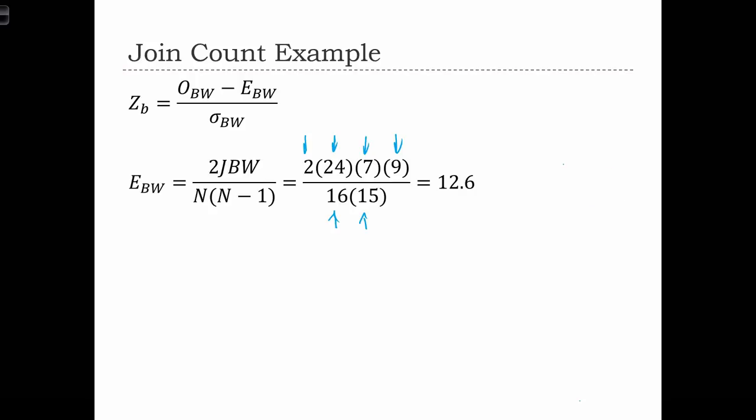When we do all of these multiplications, we see that the expected number of black-white joins is 12.6. So if the data that was split up between black and white cells in this way, if that data set were completely randomly distributed on the map, we would expect to see 12.6 black-white joins.